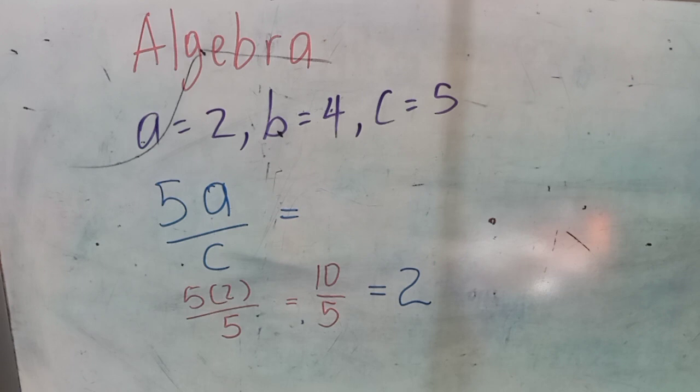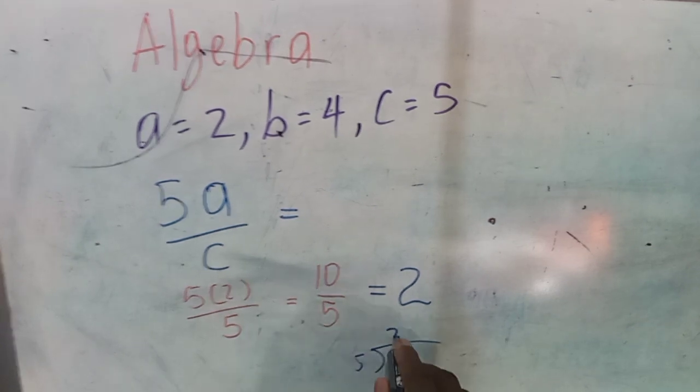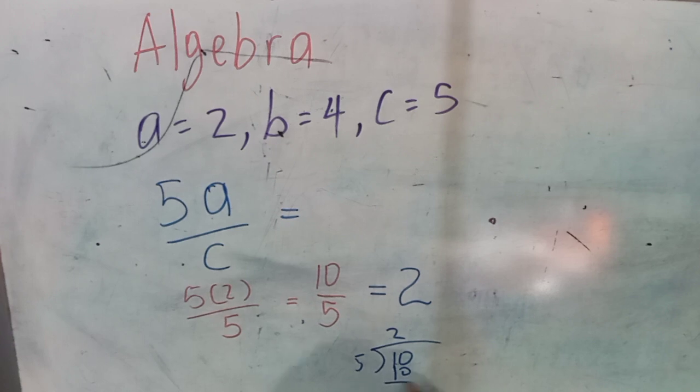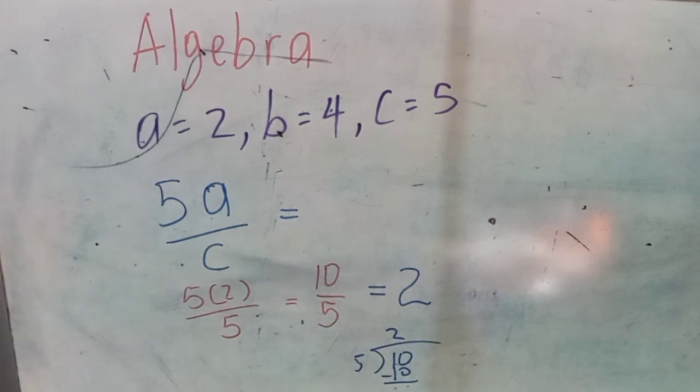And your answer is going to be 2. Or if you want to write it out like this: 5 into 10. 5 into 10 gives you 2. 2 times 5 equals 10. 10 from 10, 0.